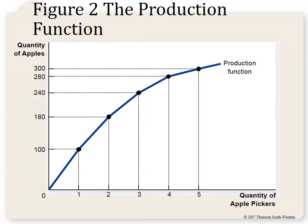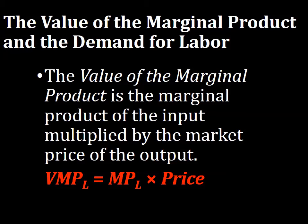The law of diminishing returns looks like this: as input increases on the horizontal axis, output increases but at a decreasing rate. The more of an input I use, the less additional output I get from that input.